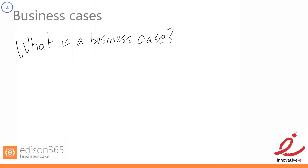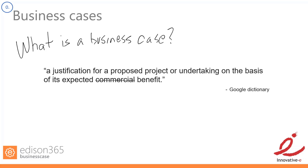What is a business case? We asked attendees and got responses like 'justify an investment' and 'justification for a project' — and that's exactly right. The Google definition is: a justification for a proposed project or undertaking based on its expected benefits. I struck out 'commercial' because many organizations — government, compliance-driven — may not be commercially oriented.